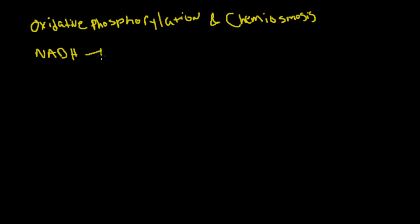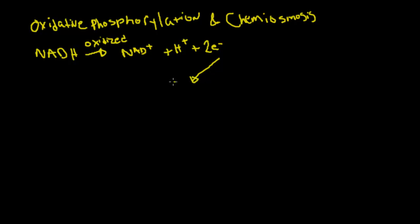We have NADH being oxidized to NAD+, and that's going to leave us with a hydrogen proton plus two electrons. Through this process we're going to coenzyme Q, and that's going to leave us with some energy. And then it's going to continue to get oxidized, leaving us with cytochrome C.